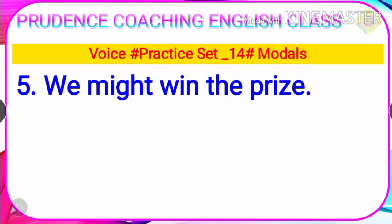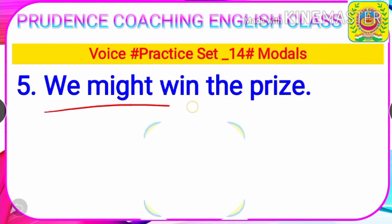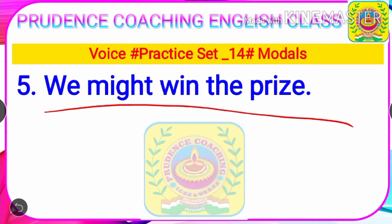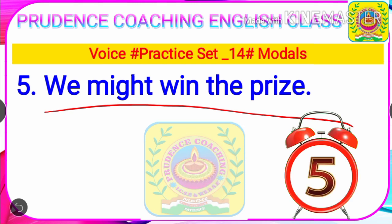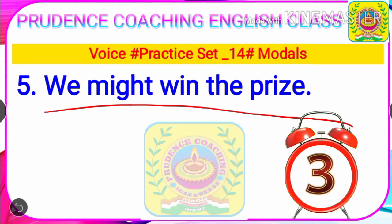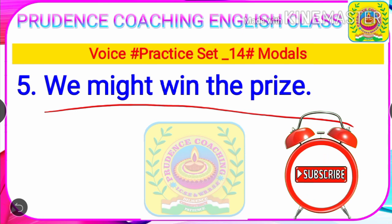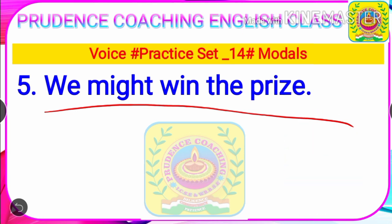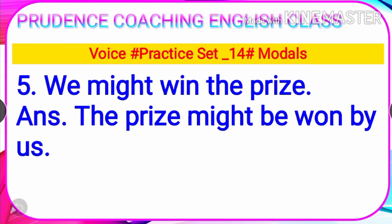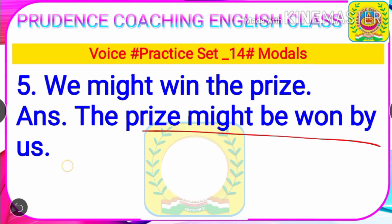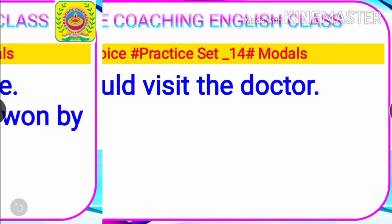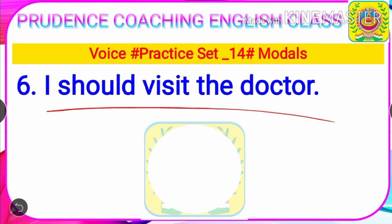Question five: 'We might win the prize.' Your time starts now. Time ends. The final answer is: 'The prize might be won by us.' Now the next question, number six: 'I should visit the doctor.' Your time starts now.